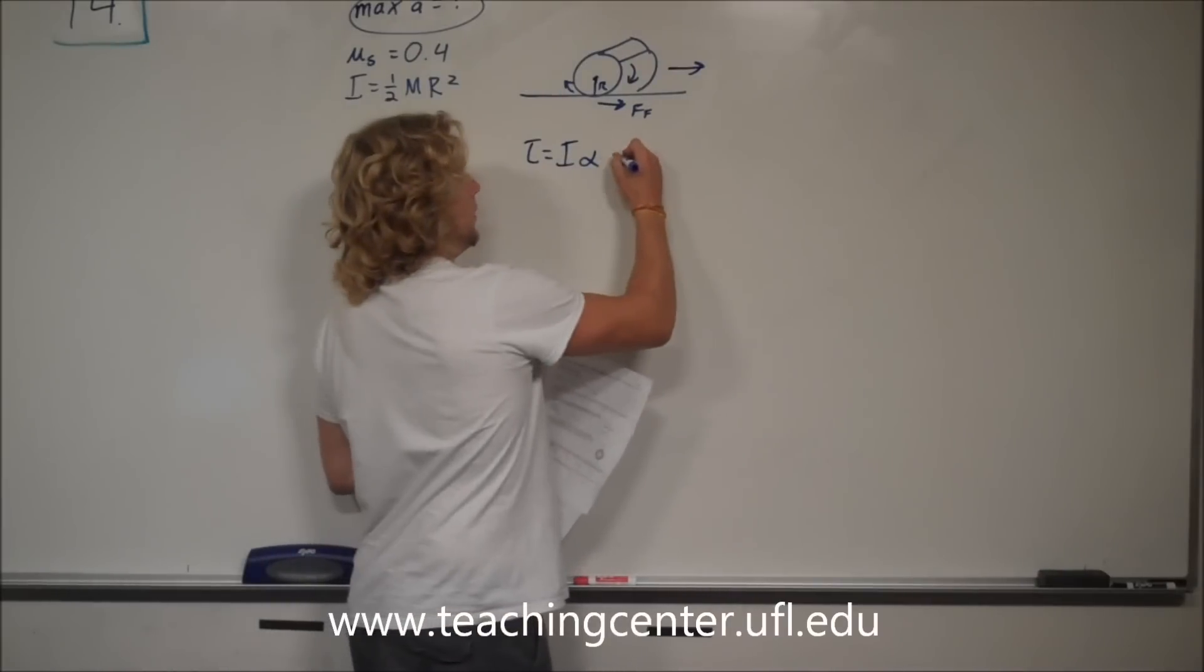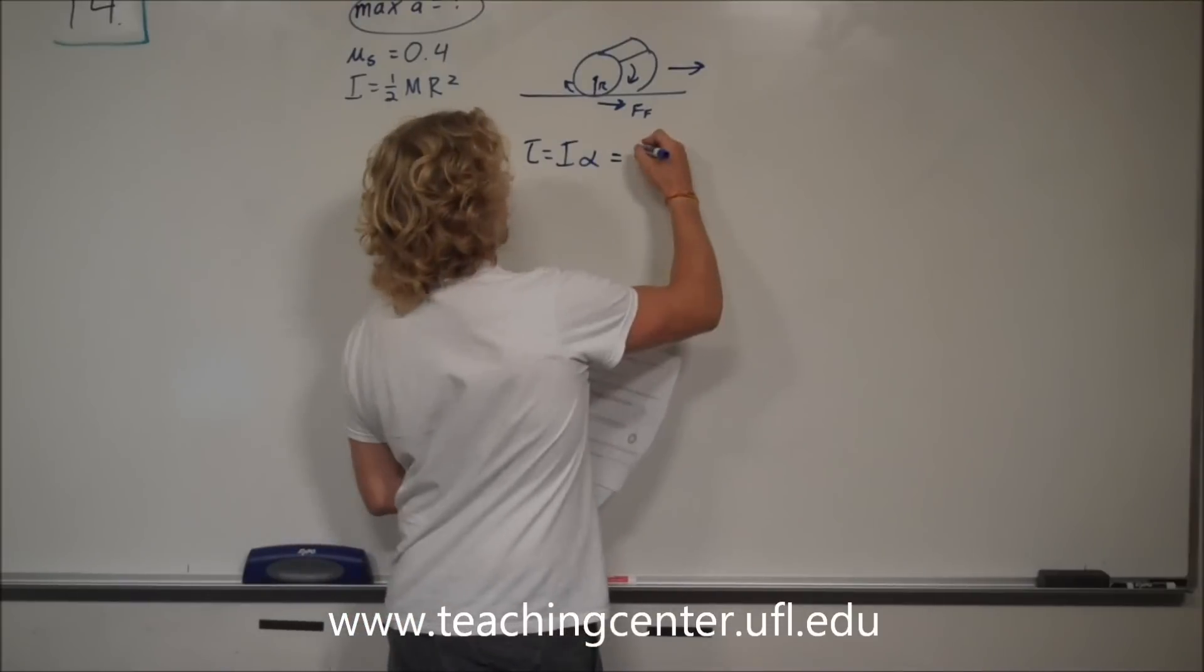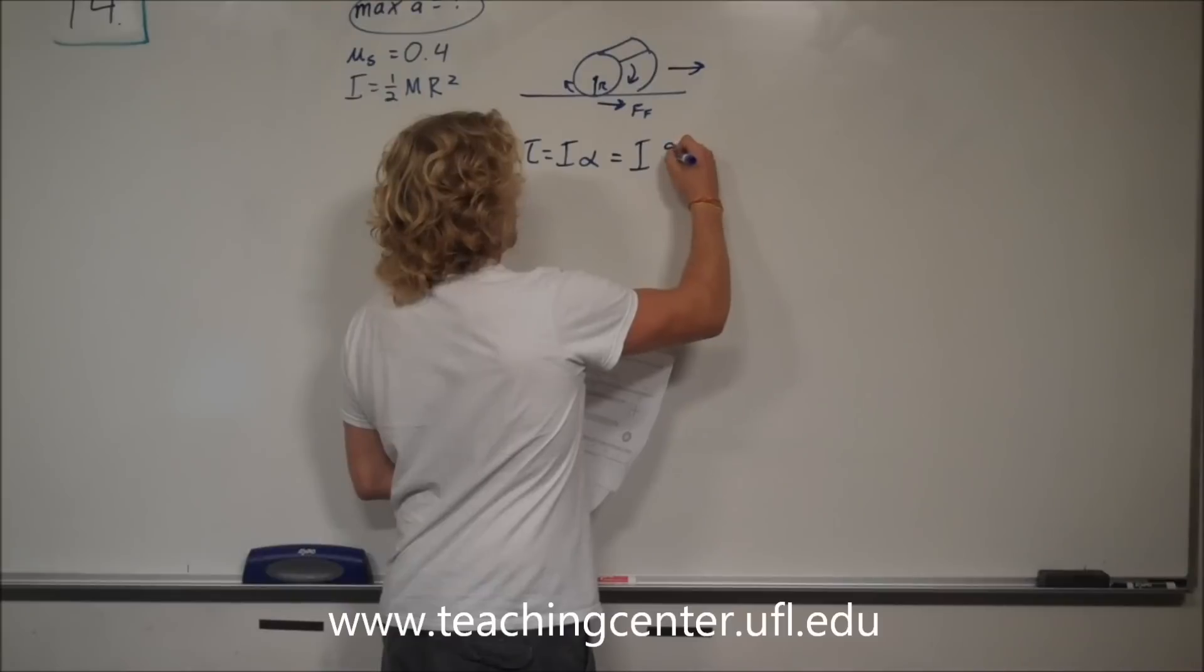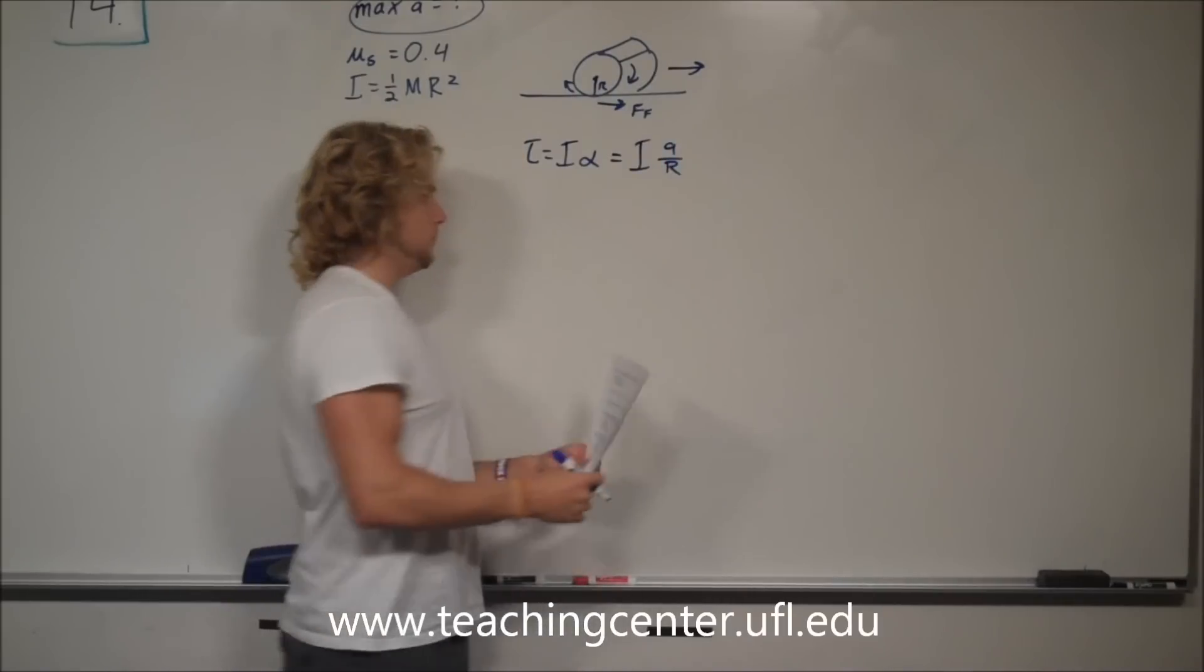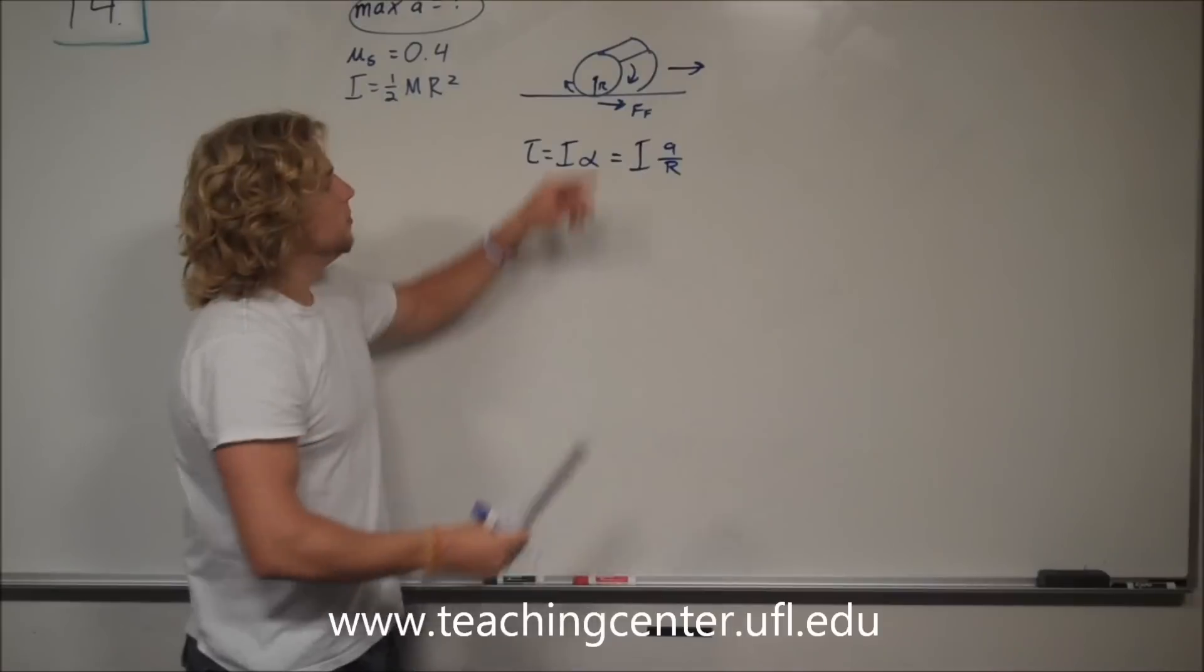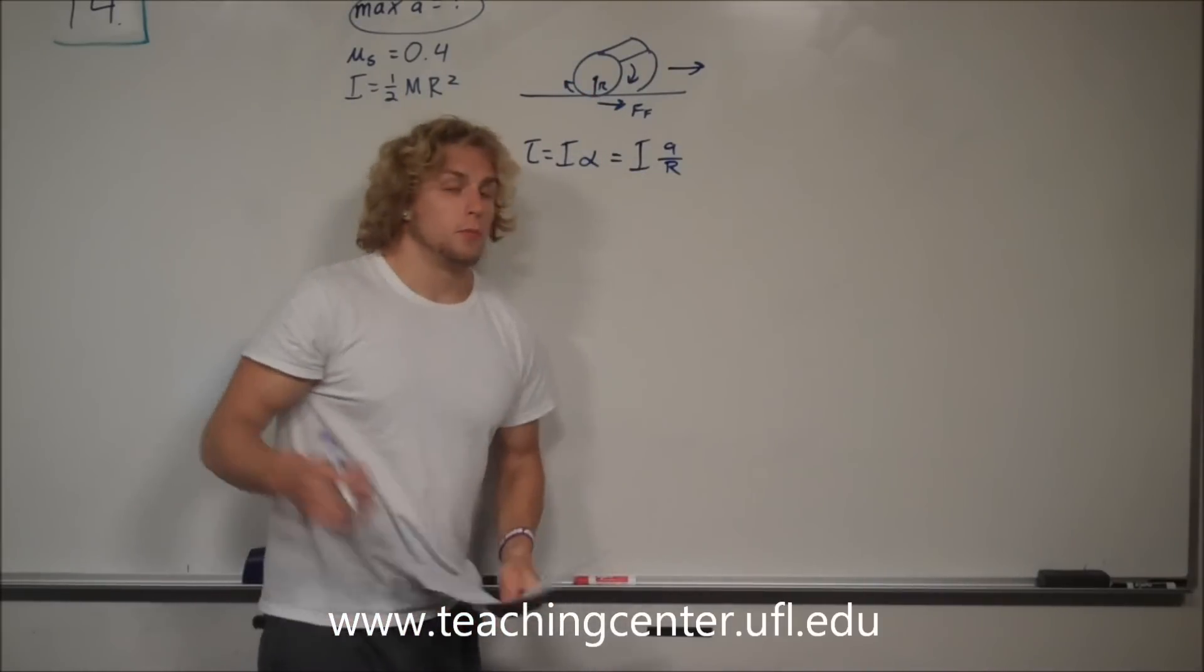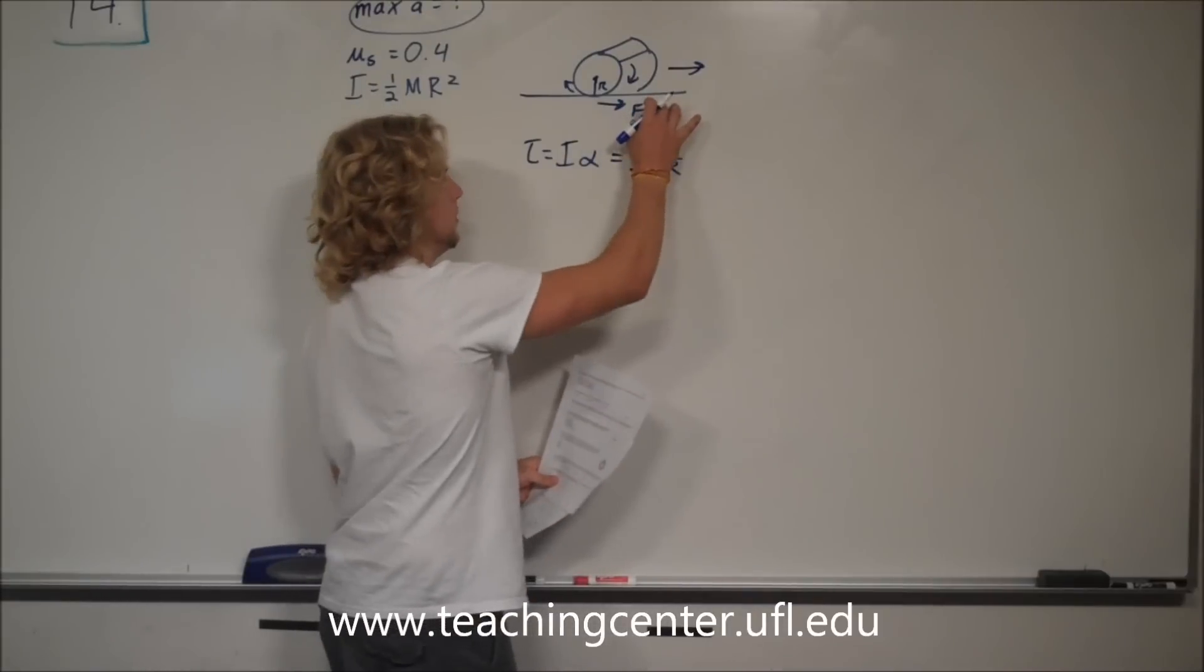Alpha is equal to acceleration over the radius. So, it ends up being that. That's the torque that the cylinder is putting on the ground to move it forward. Now, to keep it from slipping, this frictional force, the torque,